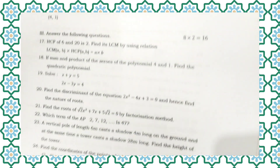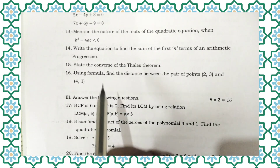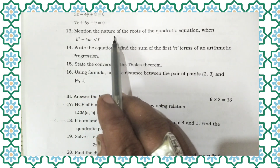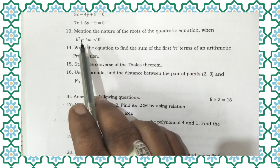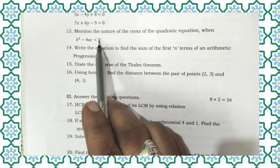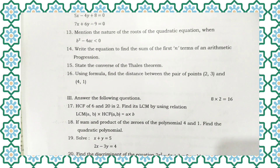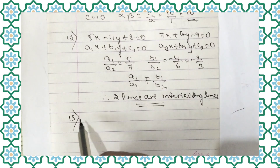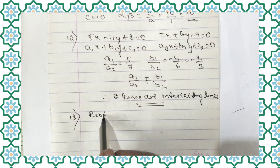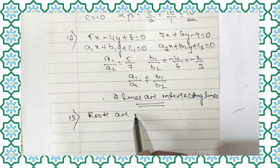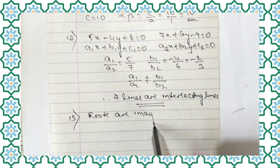Question number 13: Mention the nature of the roots of the quadratic equation when b² minus 4ac is less than 0. When the discriminant (delta) is less than 0, the roots are imaginary, or the roots are not real.